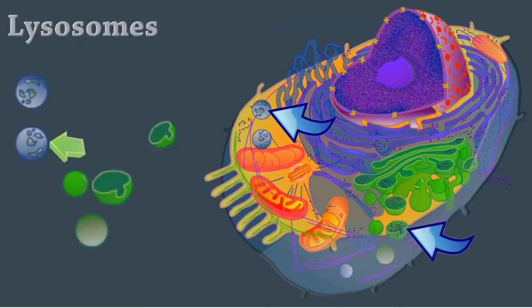Lysosomes are membranous sacs that contain acid hydrolases that break down different types of biomolecules. This is where intracellular digestion takes place. Lysosomes help with other cell processes, including secretion and the repair of plasma membranes.